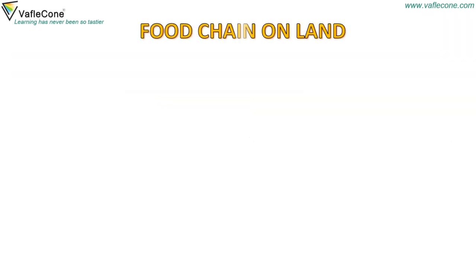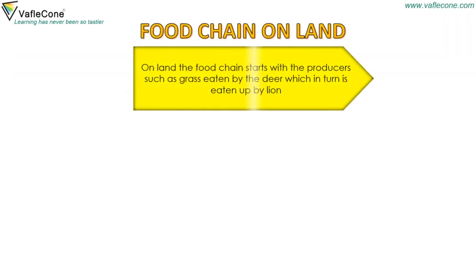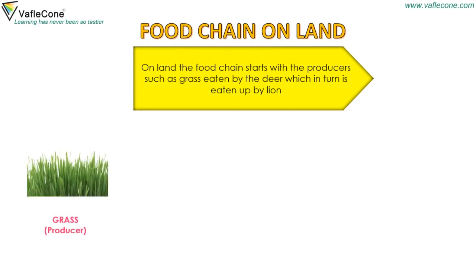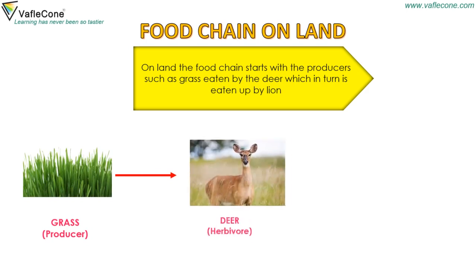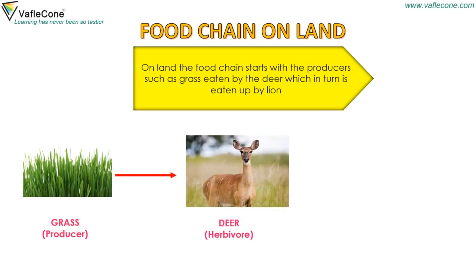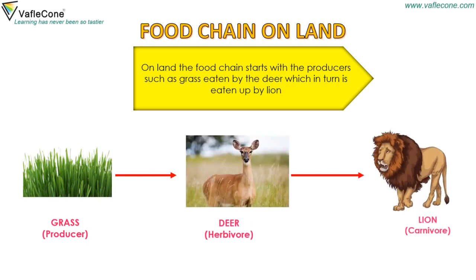Food chain on land: on land, the food chain starts with the producers such as grass, eaten by the deer, which in turn is eaten by the lion.